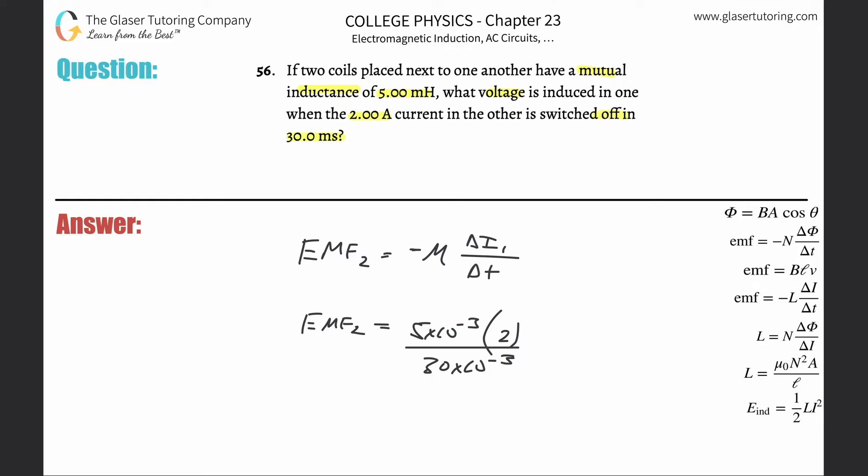Why is 2 amps the change? Well, because it started at 2 and then it was switched off. Obviously if you started with 2 and then had none left, the change is 2.